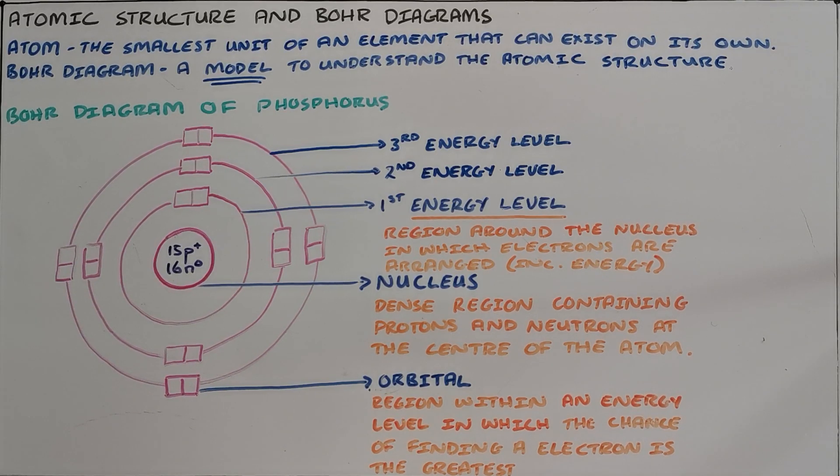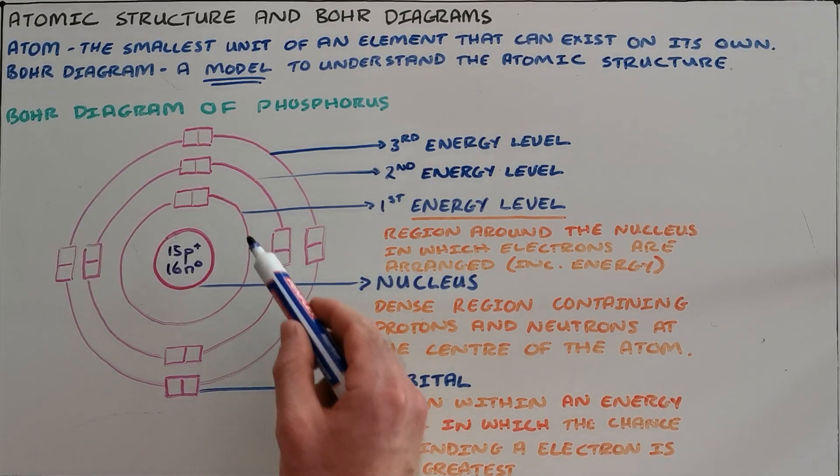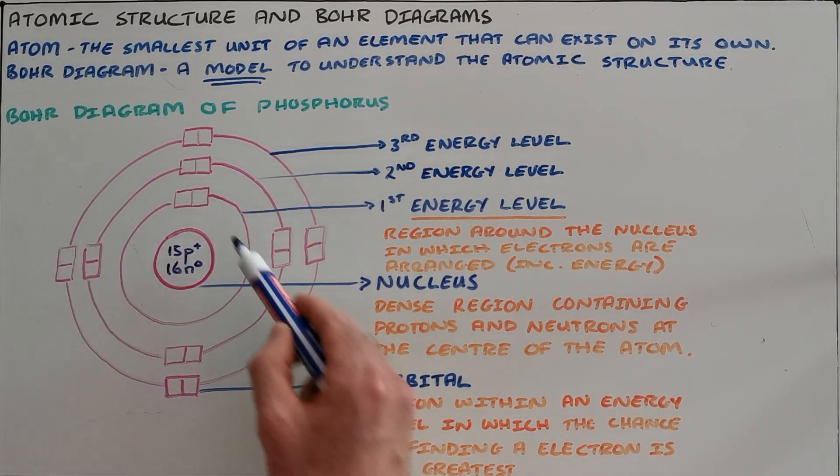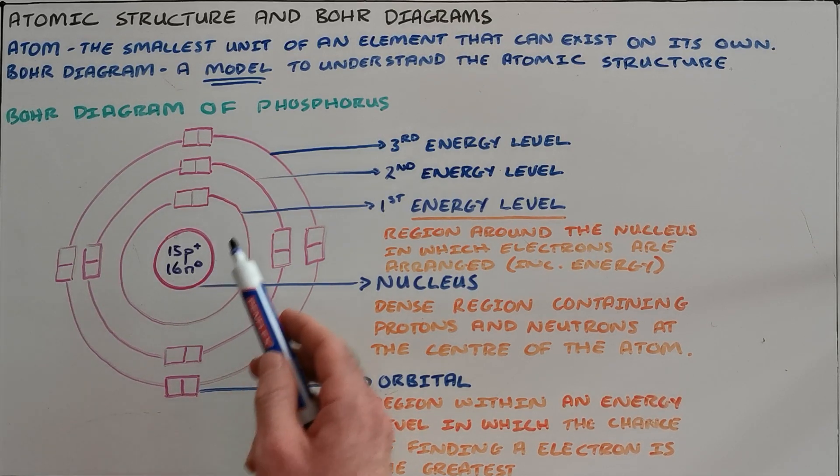The second important region in a Bohr diagram or in an atom is the energy level. An energy level is a region around the nucleus in which electrons are arranged. Important to note here that they are arranged in order of increasing energy, which tells us that the first energy level, the one closest to the nucleus, contains the electrons that have the least energy.